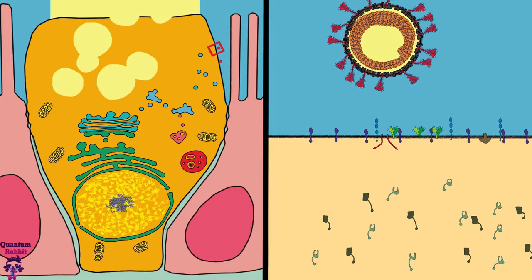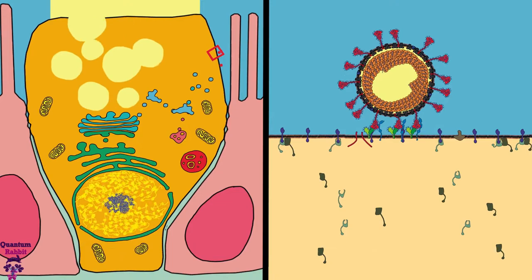But this is not the only route that the coronavirus uses to enter the cell. It can also enter through endocytosis.